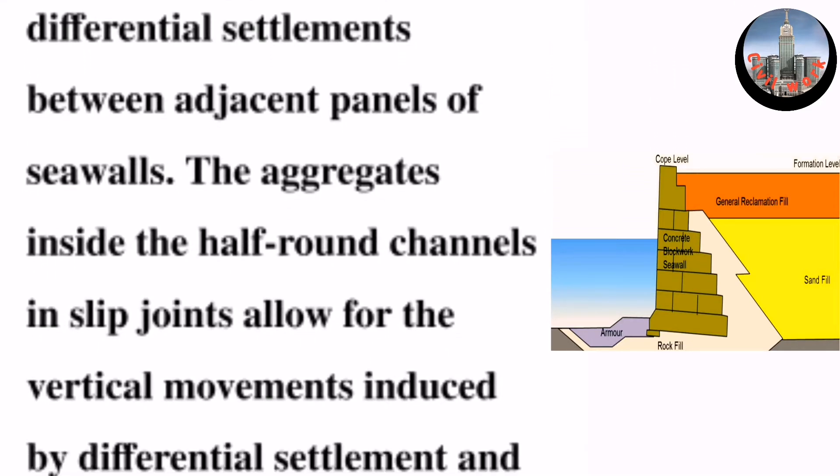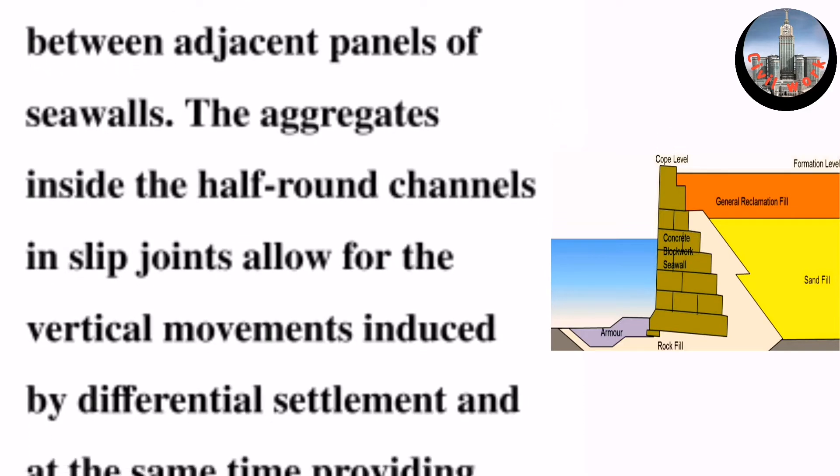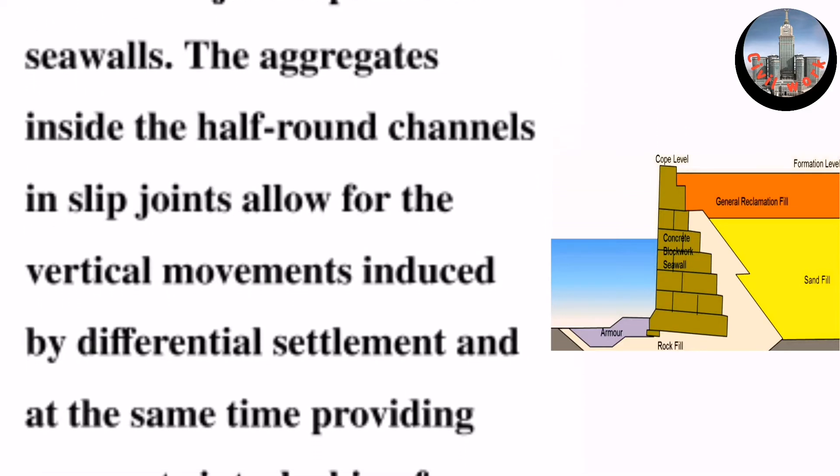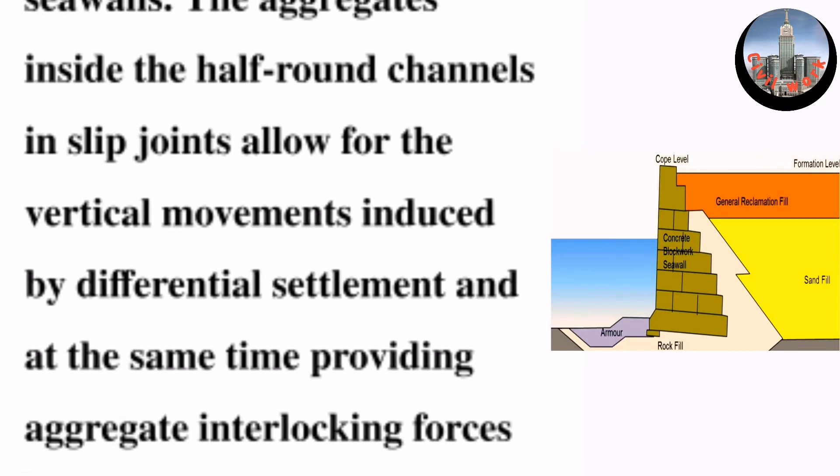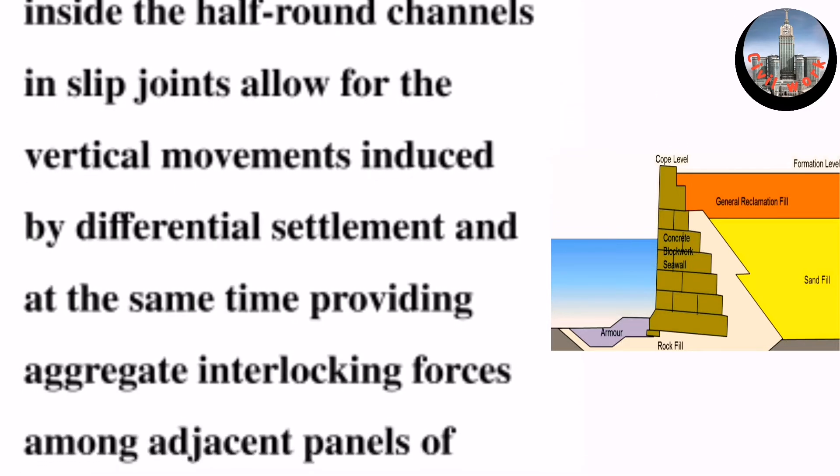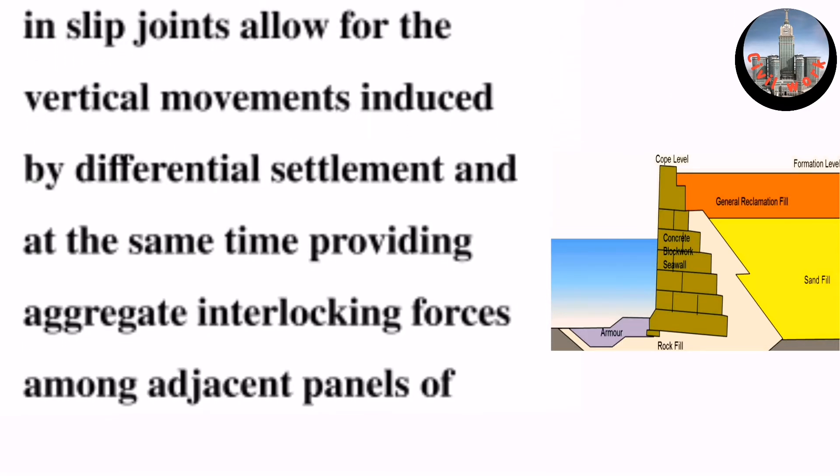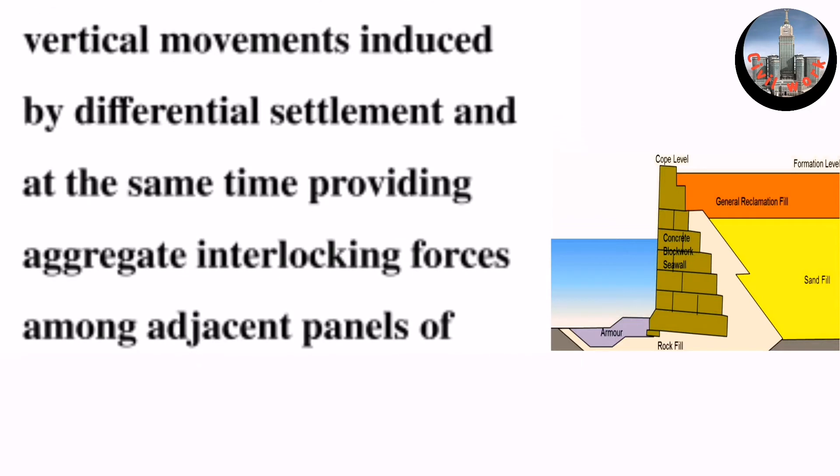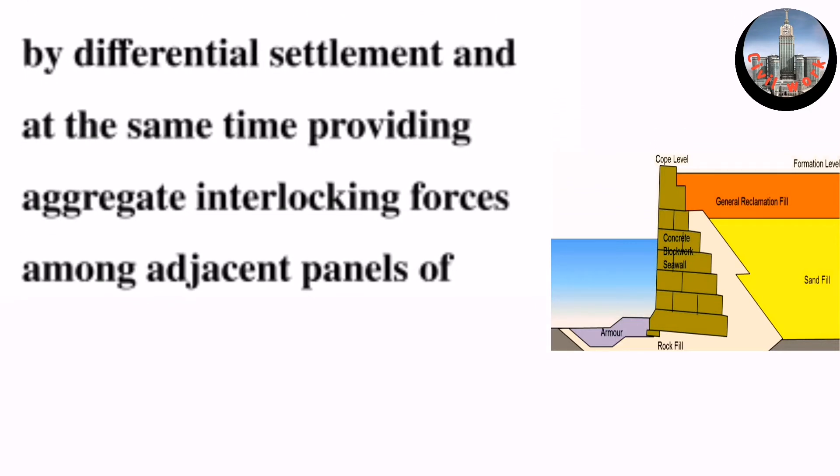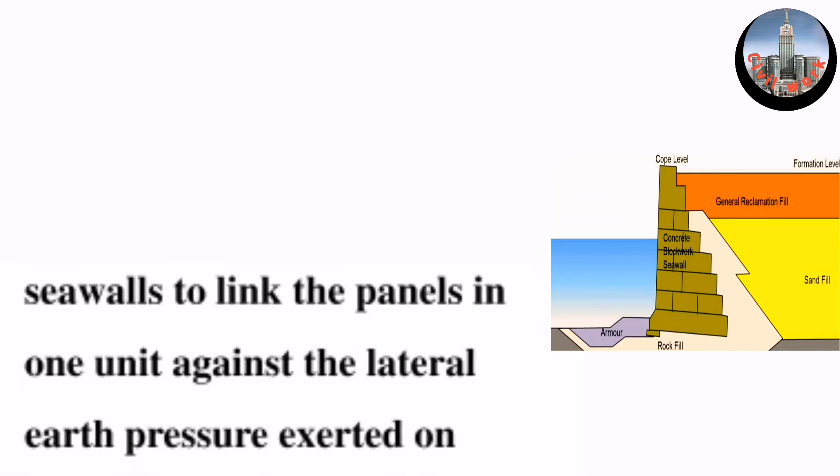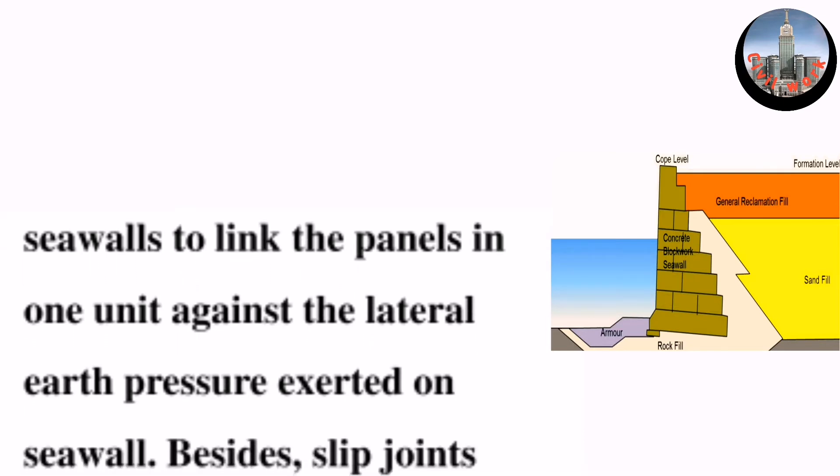The aggregates inside the half-round channels in slip joints allow for the vertical movements induced by differential settlement and at the same time provide aggregate interlocking forces among adjacent panels of seawalls to link the panels in one unit.